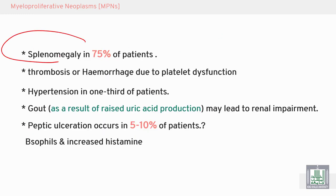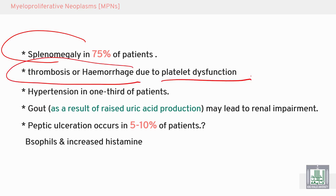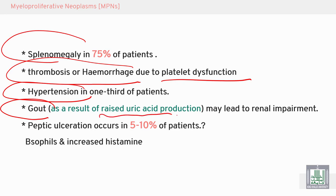Splenomegaly is present in the majority of patients. Thrombosis or hemorrhage can occur due to platelet dysfunction. Hypertension results from the increase in red cell mass. Gout is also a feature.